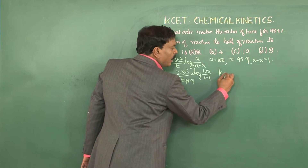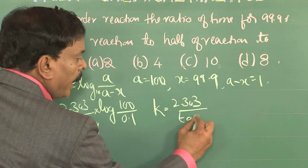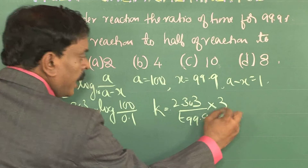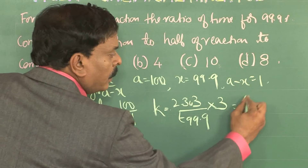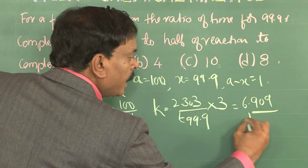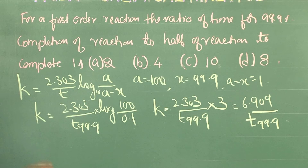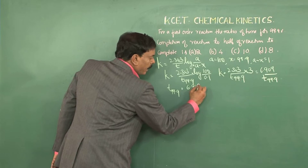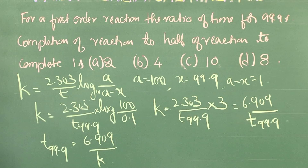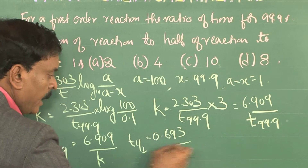Therefore, K = 2.303 / T₉₉.₉ × 3, which equals 6.909 / T₉₉.₉. That is, T₉₉.₉% = 6.909 / K. For a first order reaction, T½ = 0.693 / K.